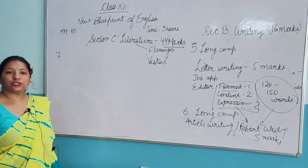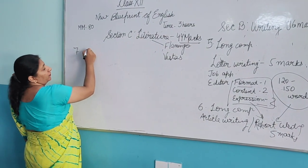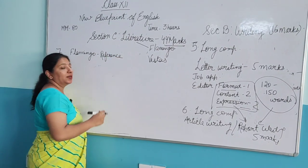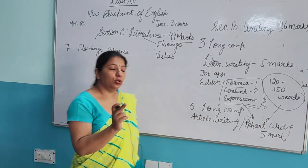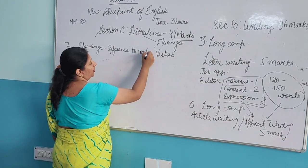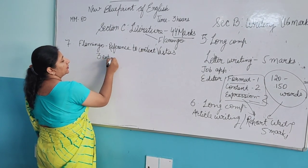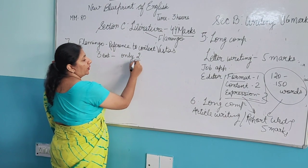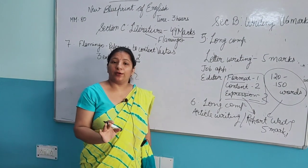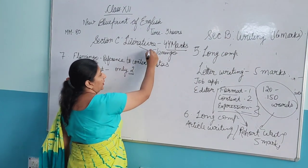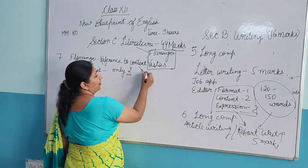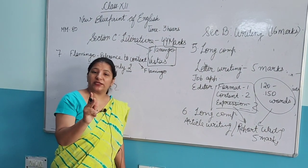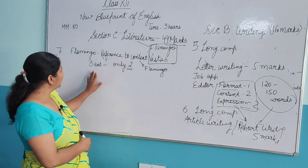The seventh question will be based on Flamingo — RTC, that is Reference to Context. You have to read the given extract and answer the questions that follow. Three extracts will be given but only two are to be attempted. These two extracts can be from either prose or poetry — from the complete Flamingo book. This section will be completely MCQ based, of 8 marks total — each extract carries 4 marks with four one-mark questions each.